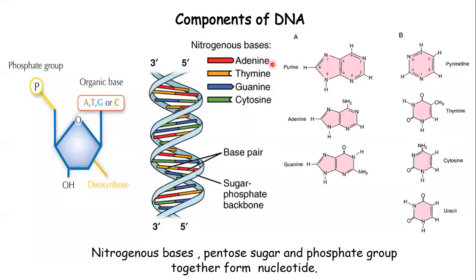Look at the components of DNA. DNA is composed of three major components: pentose sugar, nitrogenous base, and the phosphate group. Four different nitrogenous bases are present: adenine, thymine, guanine, and cytosine. Adenine and guanine are the purine bases; thymine and cytosine are the pyrimidine bases.